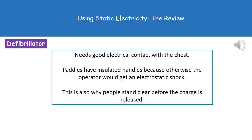These three uses — electrostatic dust precipitators, paint spraying, and defibrillators — are potentially very good six-mark exam questions, because there's certainly enough to say to earn six points. If you are asked a six-mark question on this topic, look carefully at the bullet points or guidance in the question and make sure you cover both aspects: what happens with like charges and what happens with unlike charges.